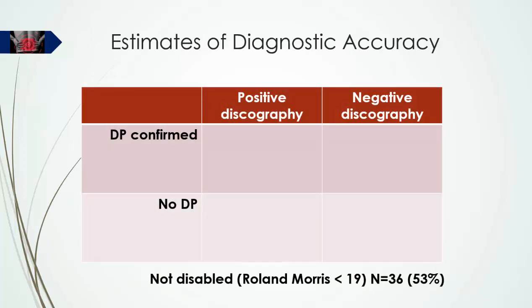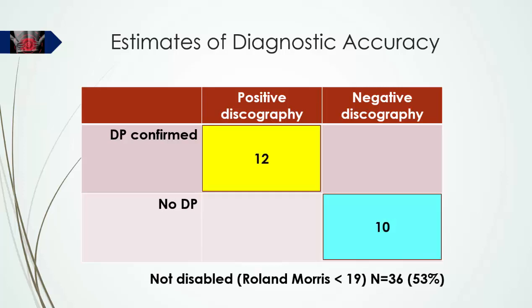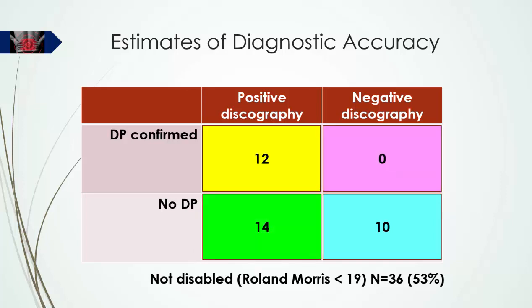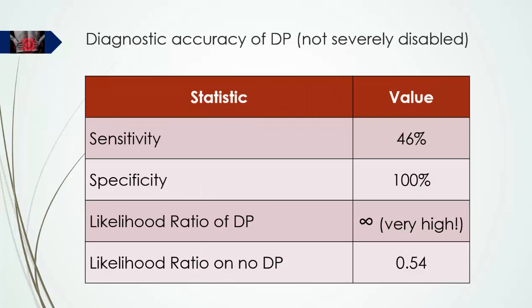Looking at the 36 patients who were not severely disabled according to the Roland Morris Disability Questionnaire, since both false positives in the whole group were categorized as severely disabled, there were no false positives in this non-severely-disabled subgroup. This has a dramatic effect on specificity. Sensitivity remains about the same, but specificity was 100% in this subgroup. The positive likelihood ratio is actually immeasurable — that is, infinity — making the finding of directional preference in this subgroup about as good as it gets diagnostically.